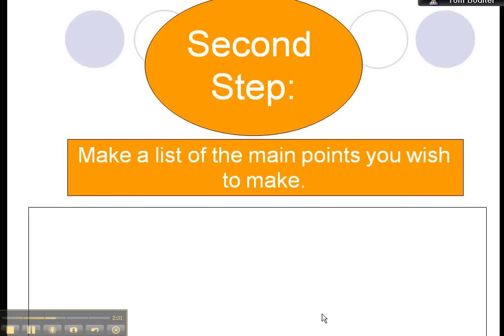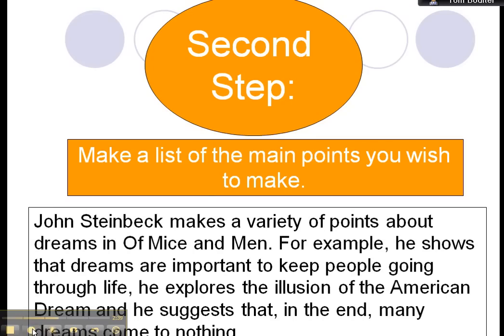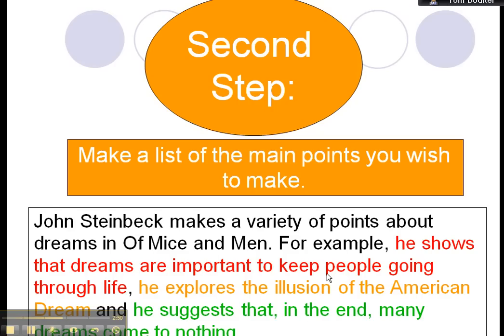The second step is where you list the main points you wish to make. So you go back to your planning, you think about your planning, and you list them in your second sentence. So here we've got, for example, he shows that dreams are important to keep people going through life. He explores the illusion of the American dream, and he suggests that, in the end, many dreams come to nothing. I hope you can see that right at the bottom. So can you see you've got one, two, three very clear ideas. That's come from the planning section.